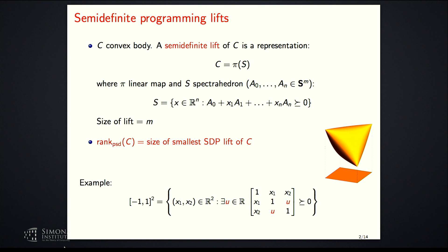The size of the lift is going to be the size of the matrices M, and the PSD rank of a convex body is the size of the smallest SDP lift. Here is an example: a linear matrix inequality describes a certain convex set in three dimensions X_1, X_2, and U. If you project it on X_1 and X_2, you get the square. So this is an SDP lift of size three of the square, and in fact that is the smallest.